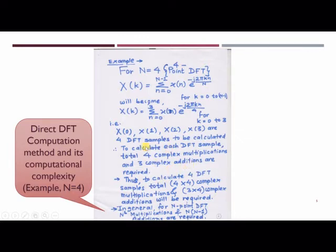those product terms will get added and they will become the complex additions. So overall there will be 4 product terms and those 4 product terms will get added up by means of 3 complex additions. Now, this is for one DFT sample wherein we have 4 DFT samples ranging from X(0) up to X(3). Thus,